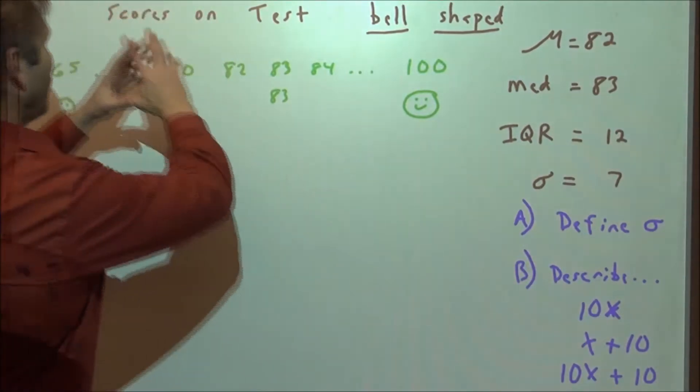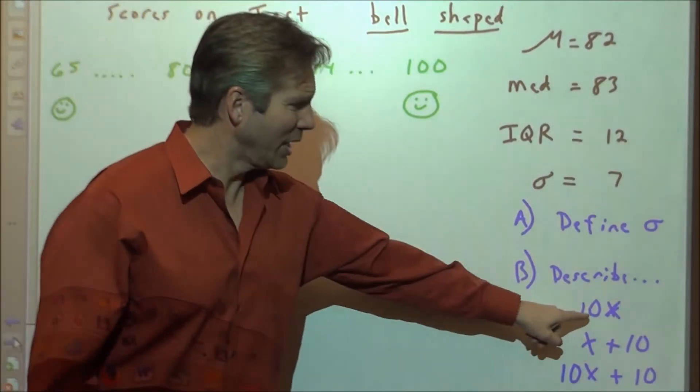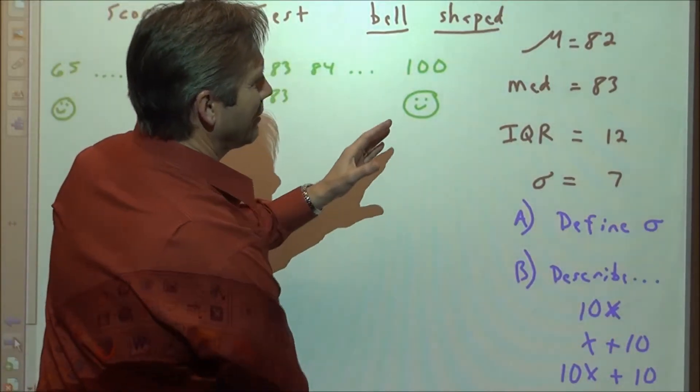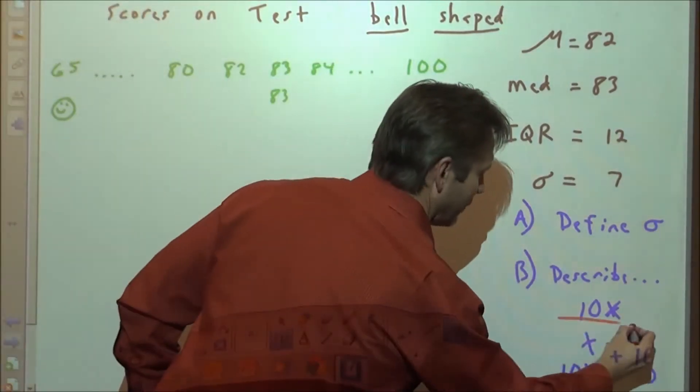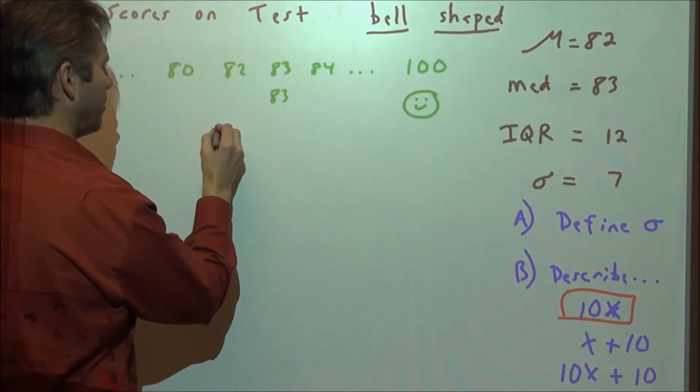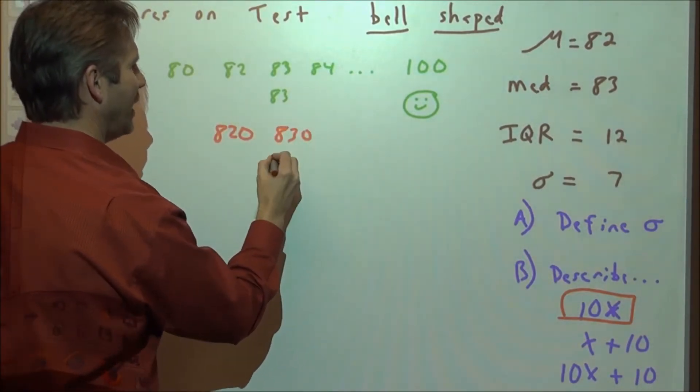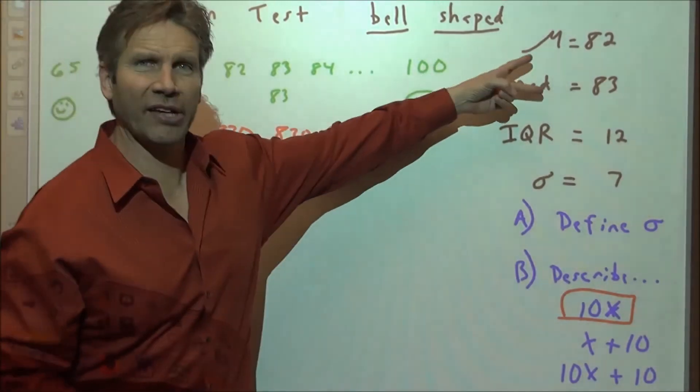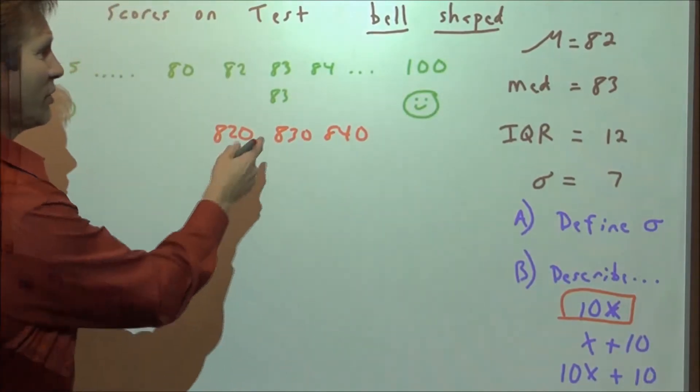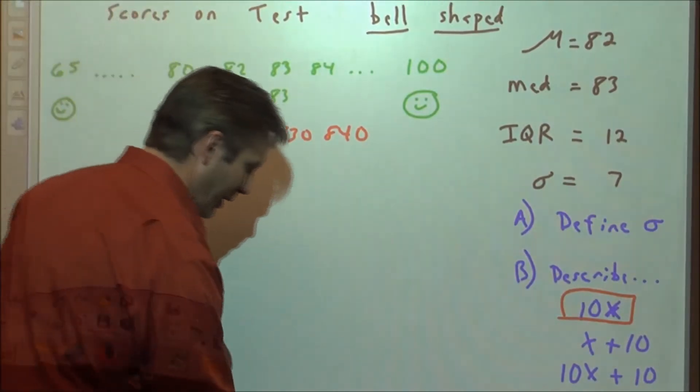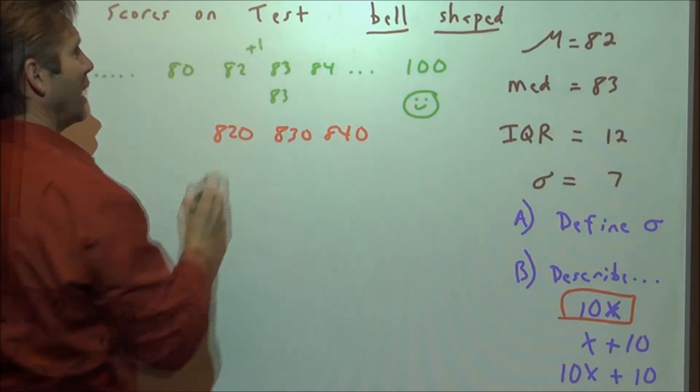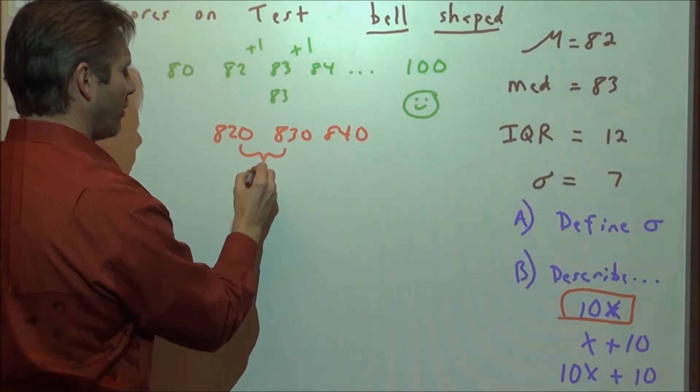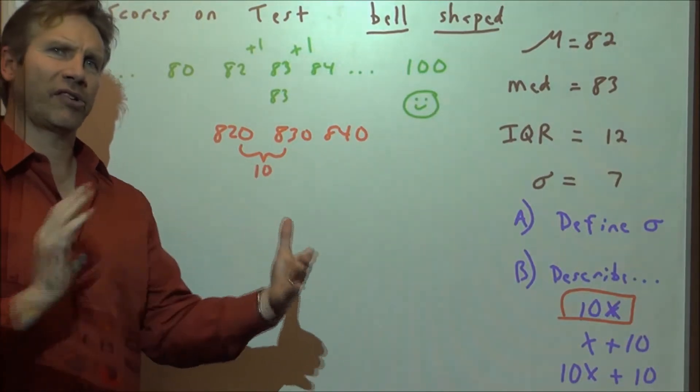What about this? If this was our original distribution, describe the distribution if we do some linear transformations. If we multiply all the scores by 10, what happens to the mean? What happens to the IQR and the standard deviation? If we multiply by 10, these scores in the middle would become like 820, 830, 840. We see that all the scores are 10 times bigger. So the measures of center, the mean and the median, are 10 times bigger. The measures of spread are also 10 times bigger because there was only a difference of one between each of these scores. But now there's a gap of 10.